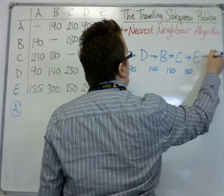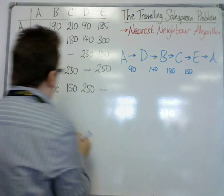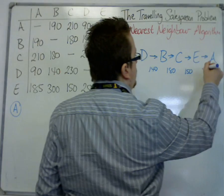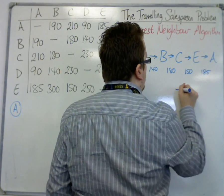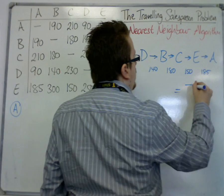and then finally we've got to get back to A by any means necessary, and that's 185. So we add all of these up together, and we get 745.